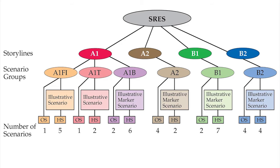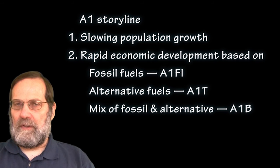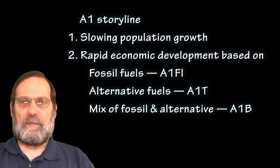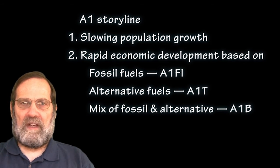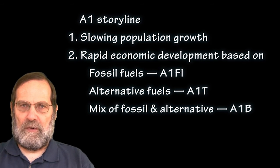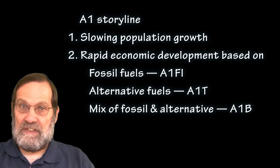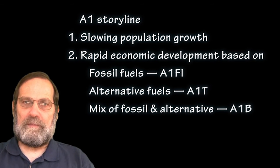These scenarios fall into four different narrative stories about possible demographic, social, economic, technological, and environmental circumstances that will drive greenhouse gas emissions. One storyline, named A1, assumes slowing human population growth but rapid economic development based on fossil fuels (A1Fi), alternative fuels (A1T), or a mix of both (A1B).